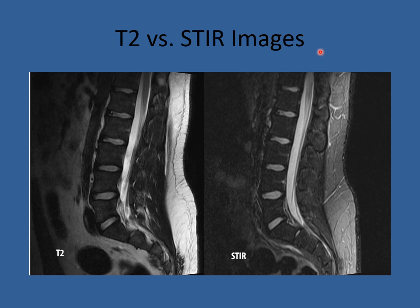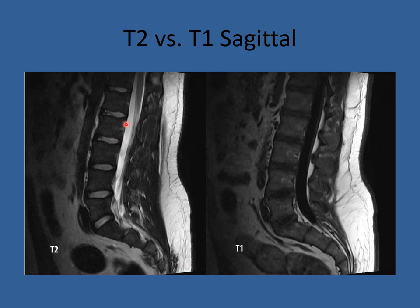There are three different images you'll be reviewing: T1 images, T2 images, and STIR or inversion recovery images. They all revolve around whether water and fat appear as bright signal or dark. On a T2, water is white — you'll see the spinal canal CSF is white, intradiscal water is white, and fat is white. On the STIR image, water is still white, but fat turns dark. On a T1, water is black but fat is still white.